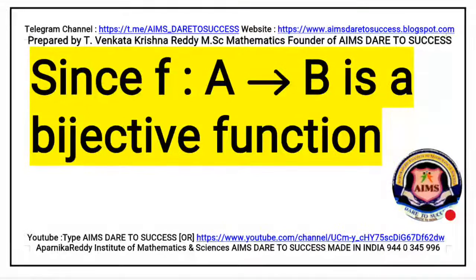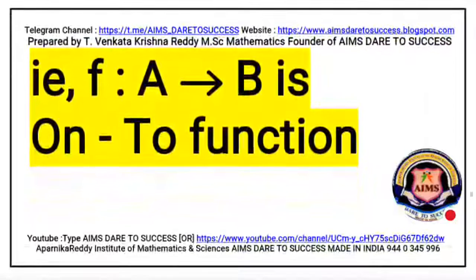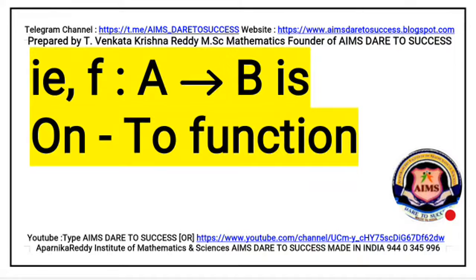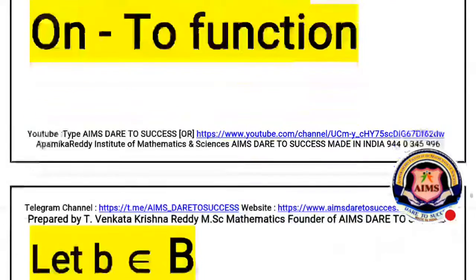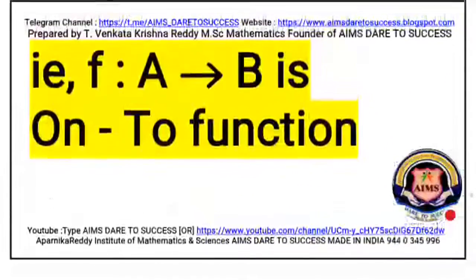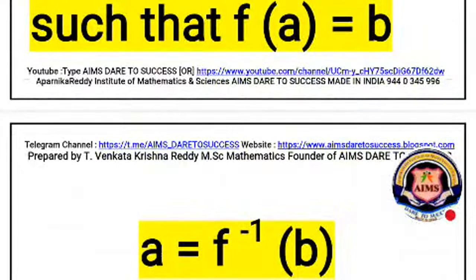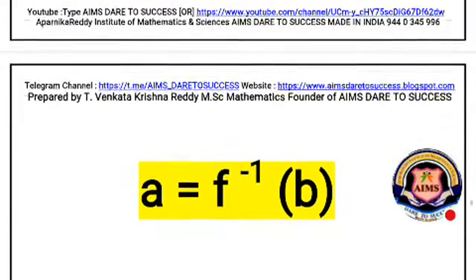Since F is a mapping from A to B which is an onto function — from the bijective function I am taking only the onto function — by the onto function definition: let small b belong to capital B; there exists small a belonging to capital A such that F of a is equal to b. According to F mapping from A to B being an onto function, F of a equals b, and therefore a equals F inverse of b.